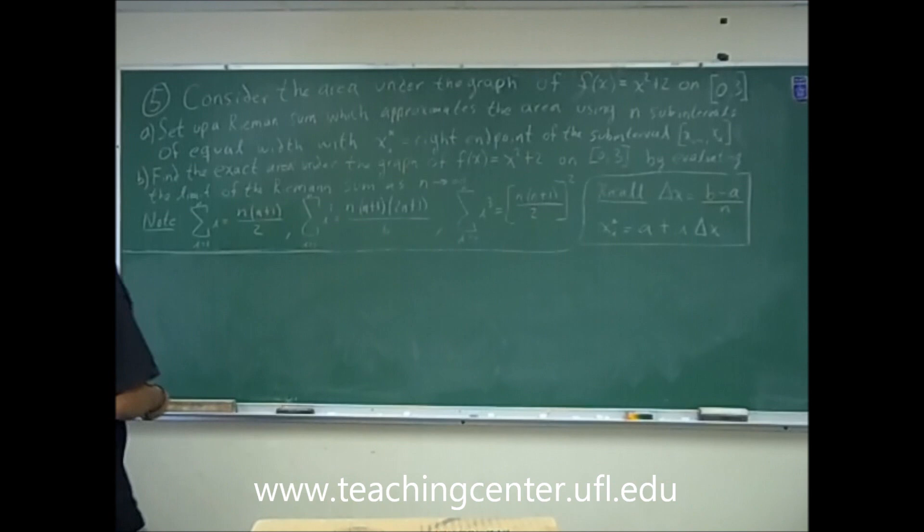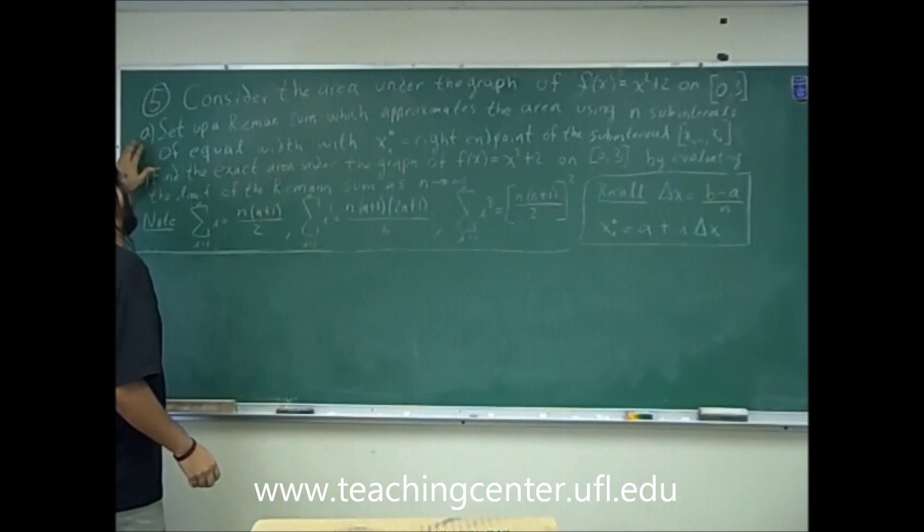Consider the area under the graph of f of x equals x squared plus 2 on the interval 0 to 3.